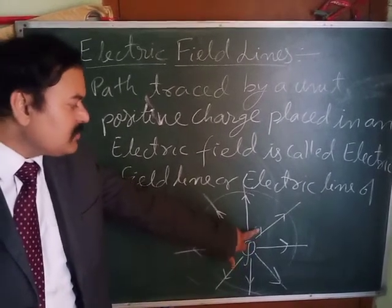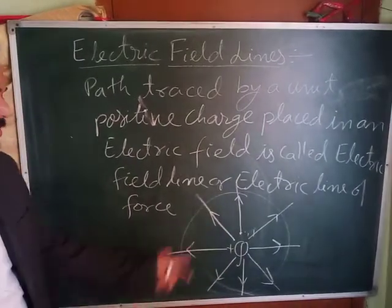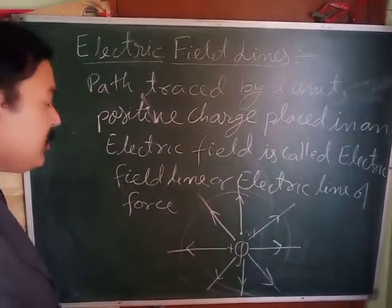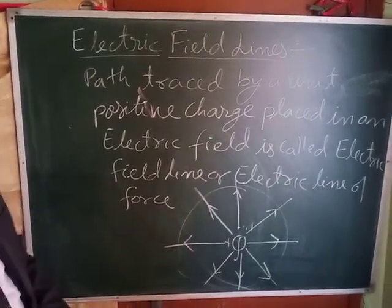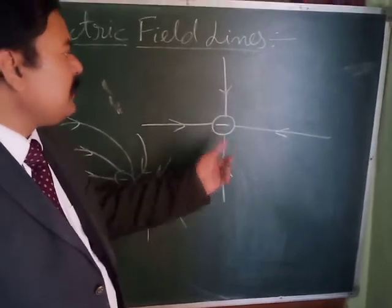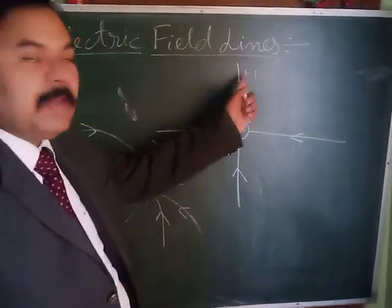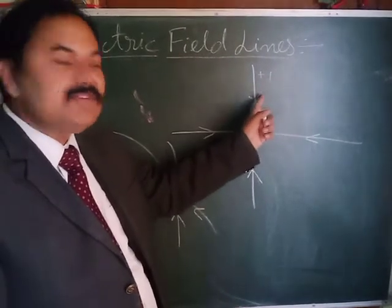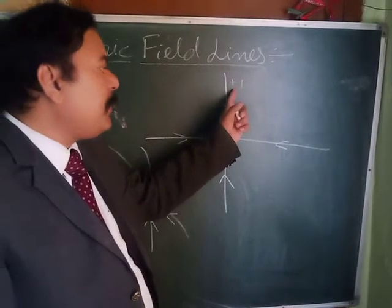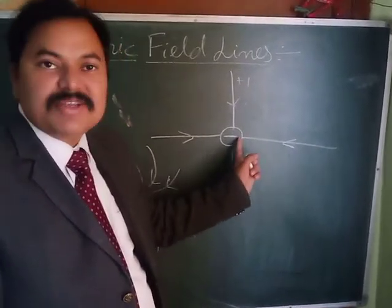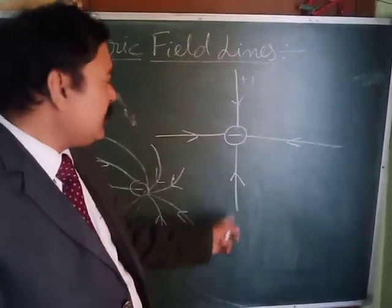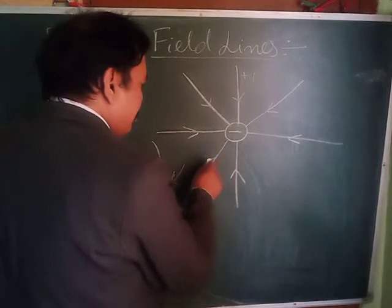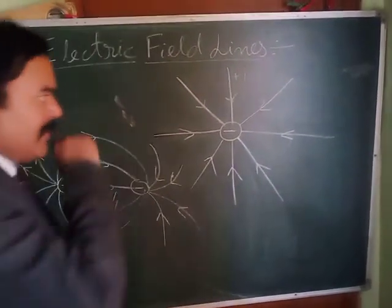The unit test charge we brought in is just to test the field — the electric field lines are what remain. Now I will draw the electric field lines due to a negative charge. For a negative charge, if you place a unit positive charge nearby, it will attract that unit positive charge, so it will move toward the negative charge. That path is the electric field line, and this is the pattern of electric field lines for a negative charge.